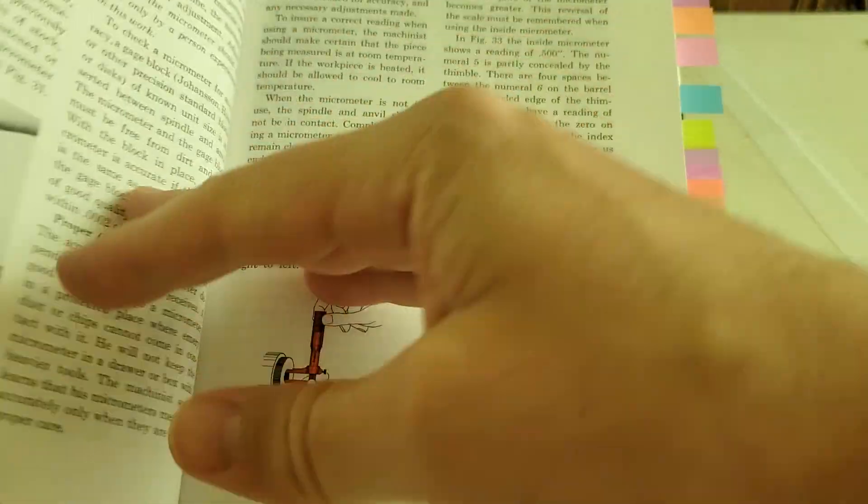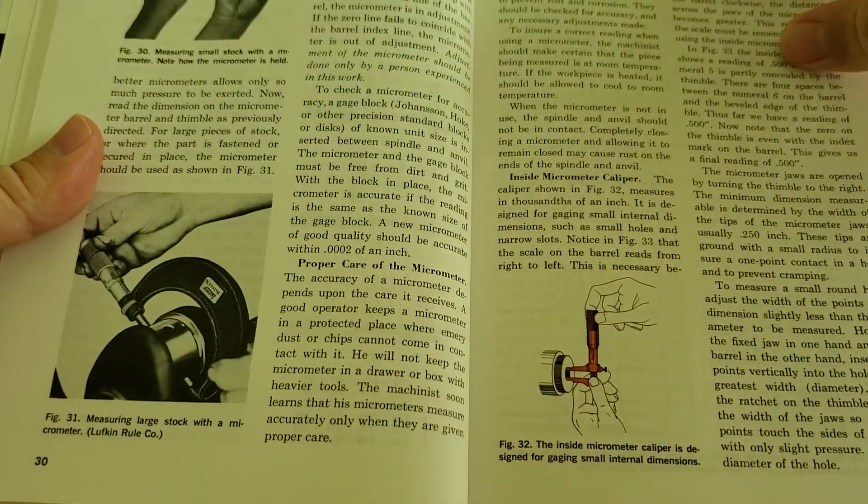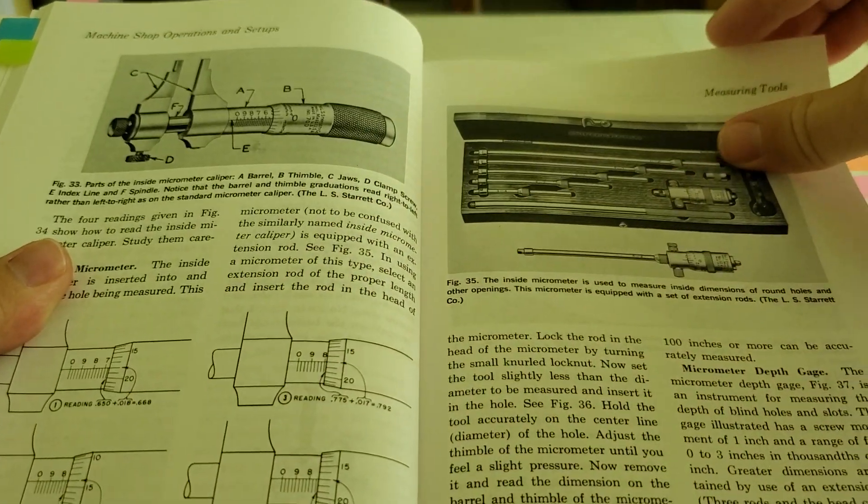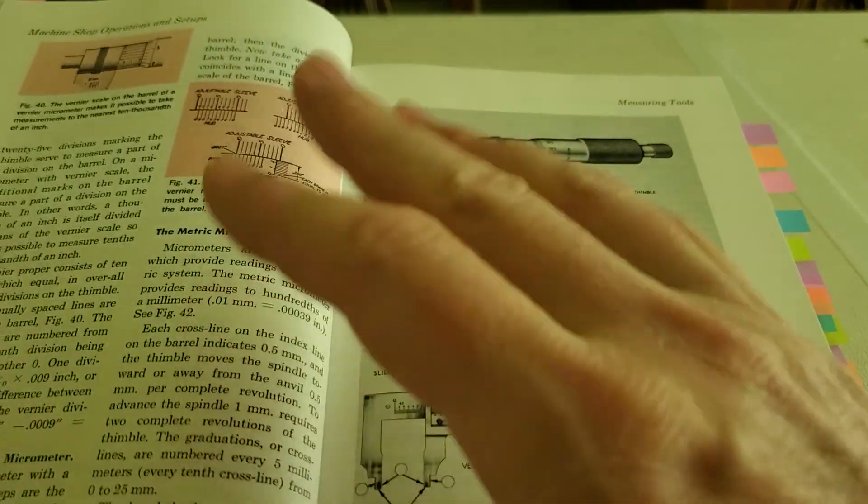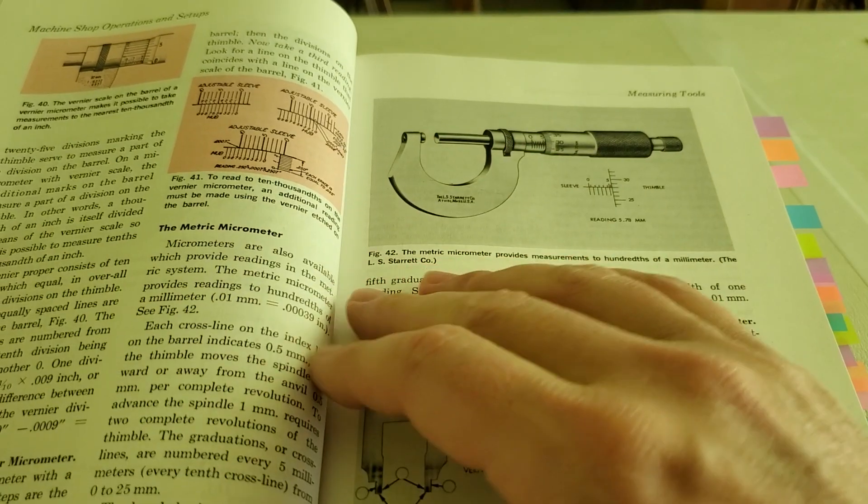And it talks about the different types of micrometers as well: outside mics, inside mics, depth mics, things like that. So if you're not familiar with those, you can check out that section.